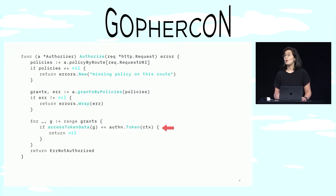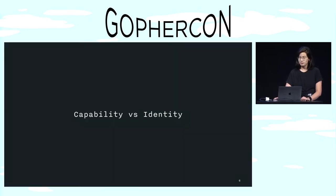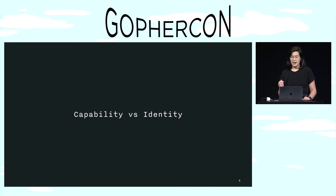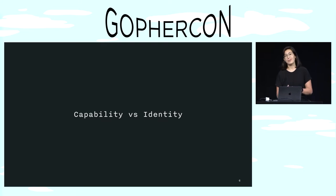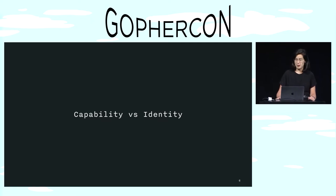But it turns out there's a whole long history of folks wrestling with this problem, and it shook out to two separate approaches. So one relied on capabilities — that is, directly granting someone the capability to do something specific — and the other relied on identity — that is, asking who that someone is, and then determining if they can take action. And that's a little abstract, so let me give you an example, which I borrowed from one of the authors of the Macaroons paper.